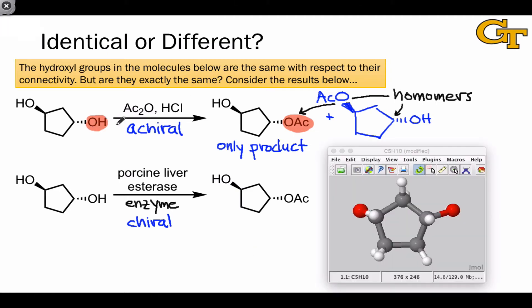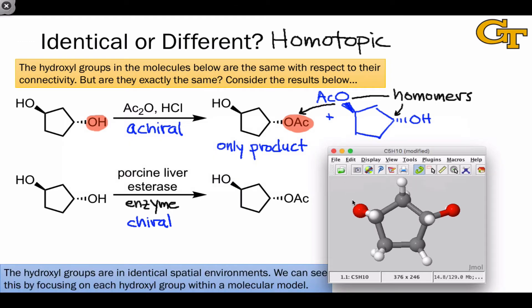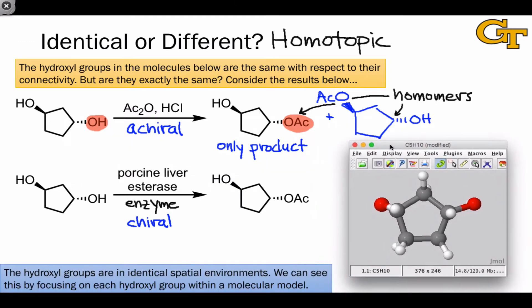Because the two hydroxyl groups react to give only one product, in other words, the two possible products are homomeric, we refer to the hydroxyl groups as homotopic. Homotopic groups are in equivalent spatial environments, and we can see this by thinking about a molecular model.